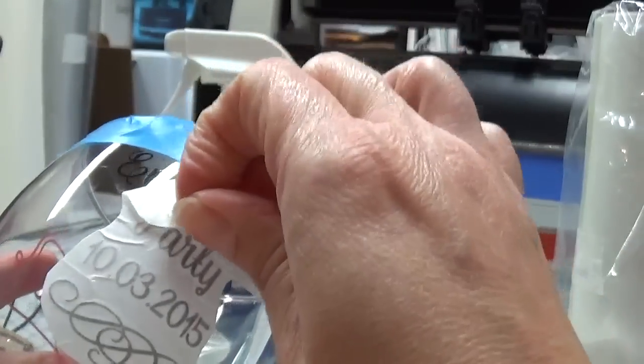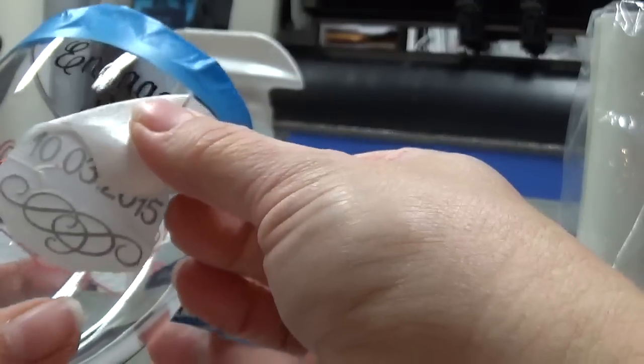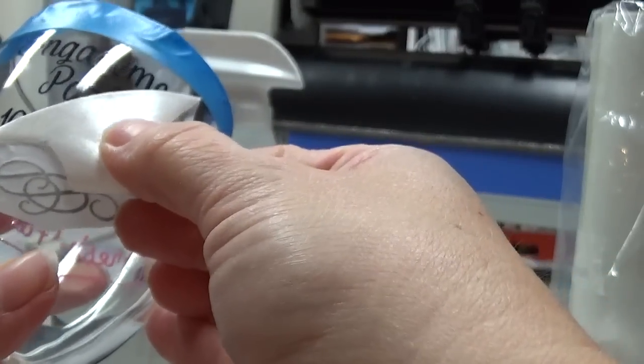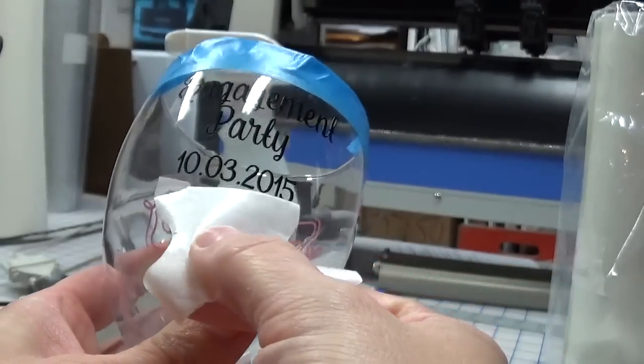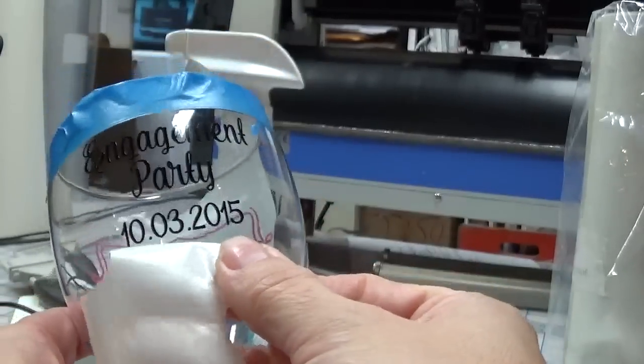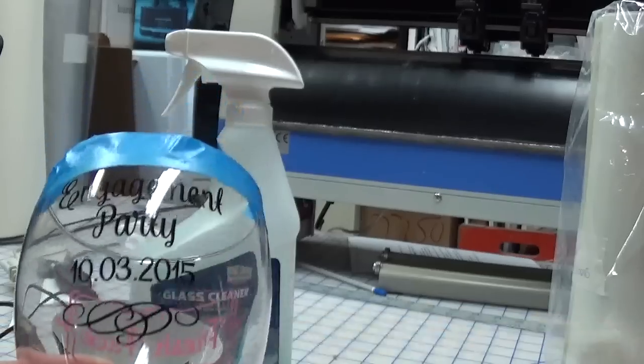Then we're going to peel off our transfer tape, nice and slow. Again, making sure the letters are sticking to the glass. And now we have it.